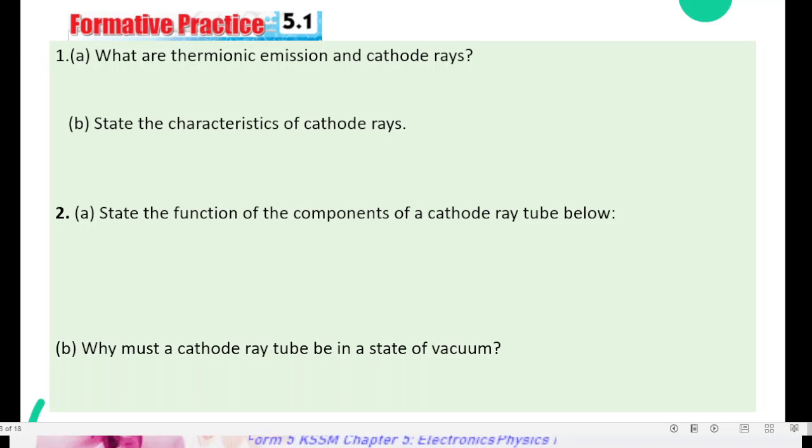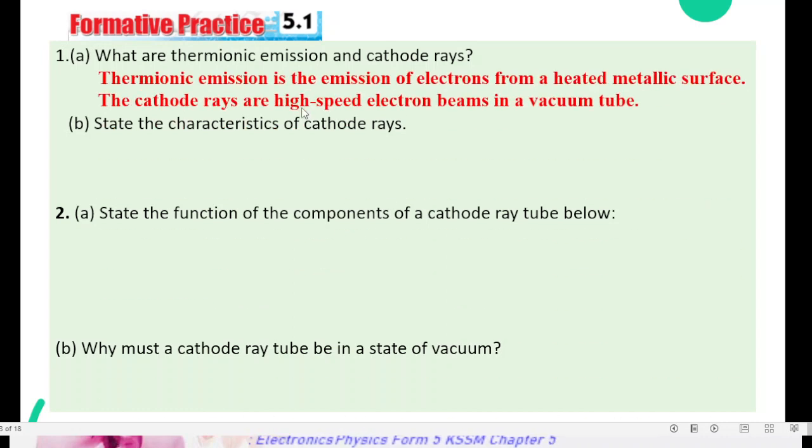Number 1A, what are thermionic emission and cathode rays? So this one, definitions. Just write it down. Thermionic emission is emission of electrons from a heated metal surface. Cathode rays are high-speed electron beams in a vacuum tube.